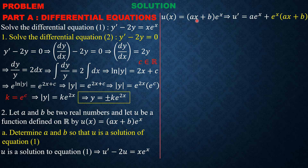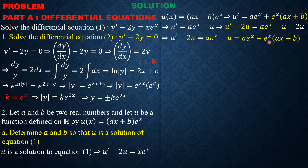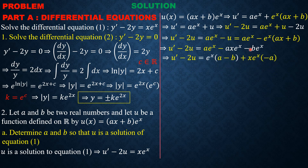Using the product rule: we keep eˣ constant and differentiate (ax + b) to get a·eˣ, then keep (ax + b) constant and differentiate eˣ. So u prime equals a·eˣ plus (ax + b)eˣ, where the second term is just u(x). Then u prime minus 2u equals a·eˣ plus u minus 2u, which simplifies to a·eˣ minus u. Substituting u back gives a·eˣ minus (ax + b)eˣ, and expanding and grouping yields eˣ·(a minus b) plus x·eˣ·(negative a).